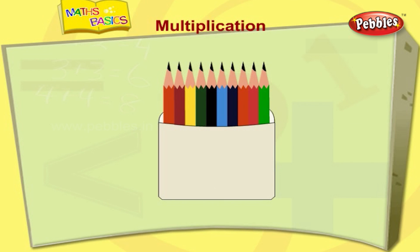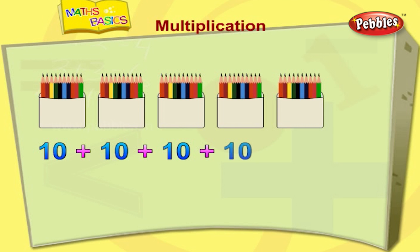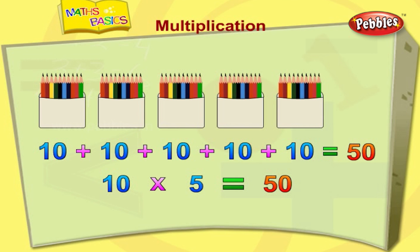Let's see another example. This is a bundle of ten pencils. If you want to count the total number of pencils in the bundle, you have to add the number ten five times: ten plus ten plus ten plus ten plus ten is equal to fifty. Instead of adding ten five times, multiply ten and five — ten fives are fifty.